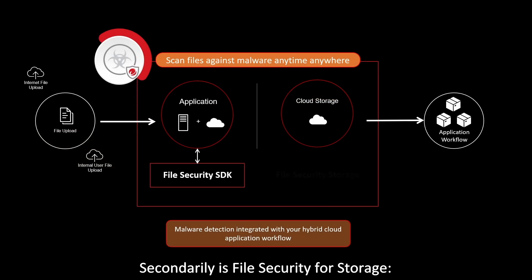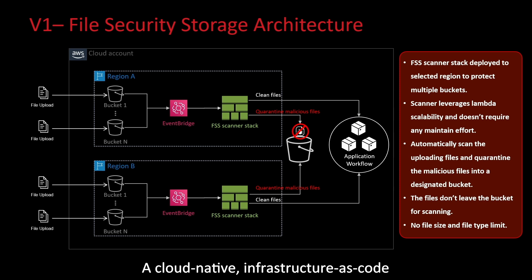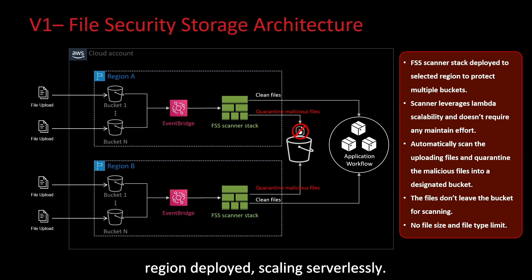The second option is File Security for Storage — a cloud-native, infrastructure-as-code-based deployment that can be utilized on a region-based, per-account basis, quickly covering all cloud object storage in each region deployed, scaling serverlessly.